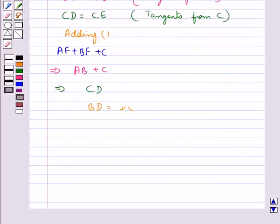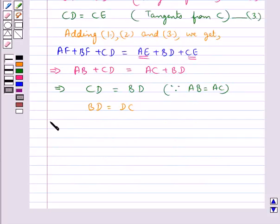So we have proved this. Final answer is that BC is bisected at the point of contact.